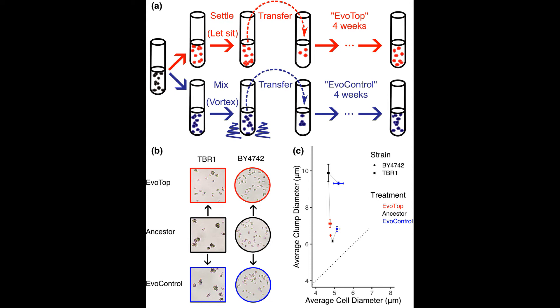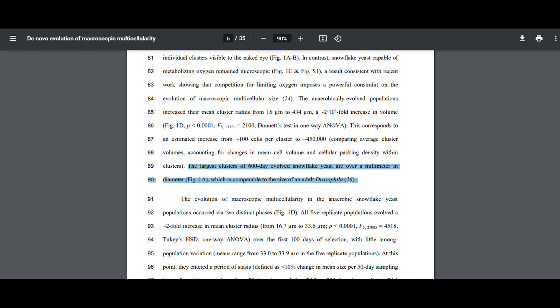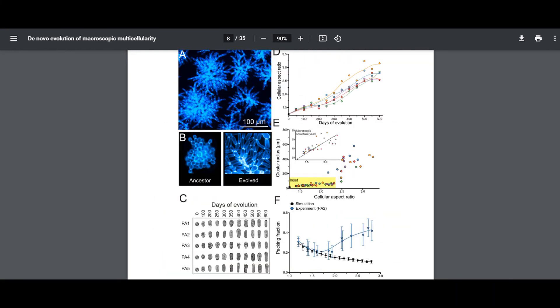Similar to the yeast experiment we discussed in experimental evolution part 1, the researchers selected their yeast by only allowing the yeast that settled out fastest in the tubes to propagate. This selected for increasing size. The anaerobic cluster sizes increased in diameter from 32 micrometers to 868 micrometers, or from about 100 cells to about 450,000 cells. According to the paper, the largest clusters of 600-day evolved snowflake yeast are over a millimeter in diameter, which is comparable to the size of an adult drosophila. The evolution of size in the anaerobic populations seems to have proceeded via two major steps. First, the clusters doubled in radius, and then they entered a period of stasis for 50 to 250 rounds before rapidly increasing in size.